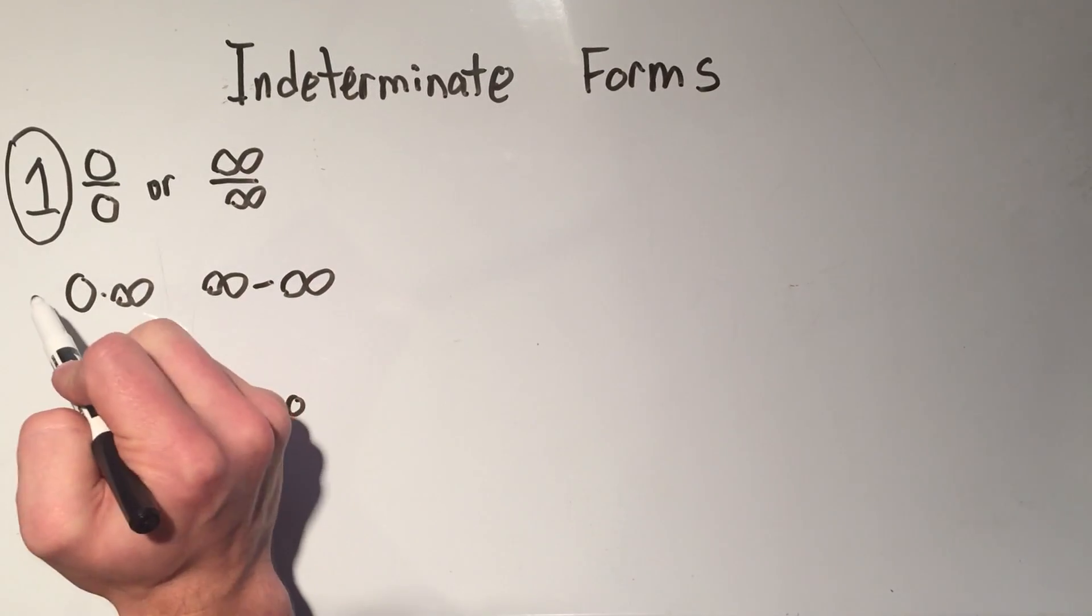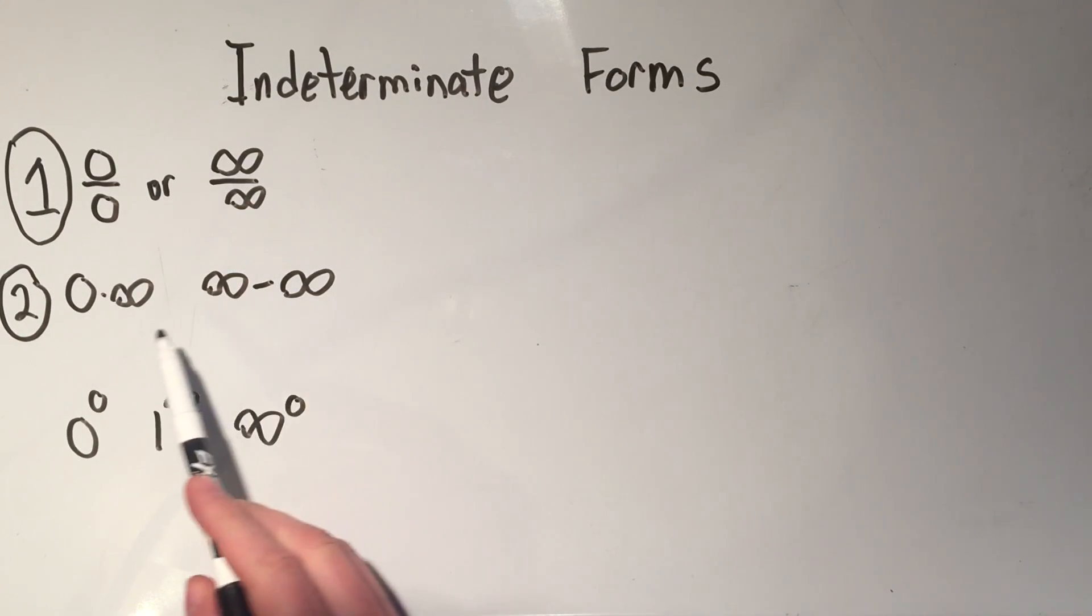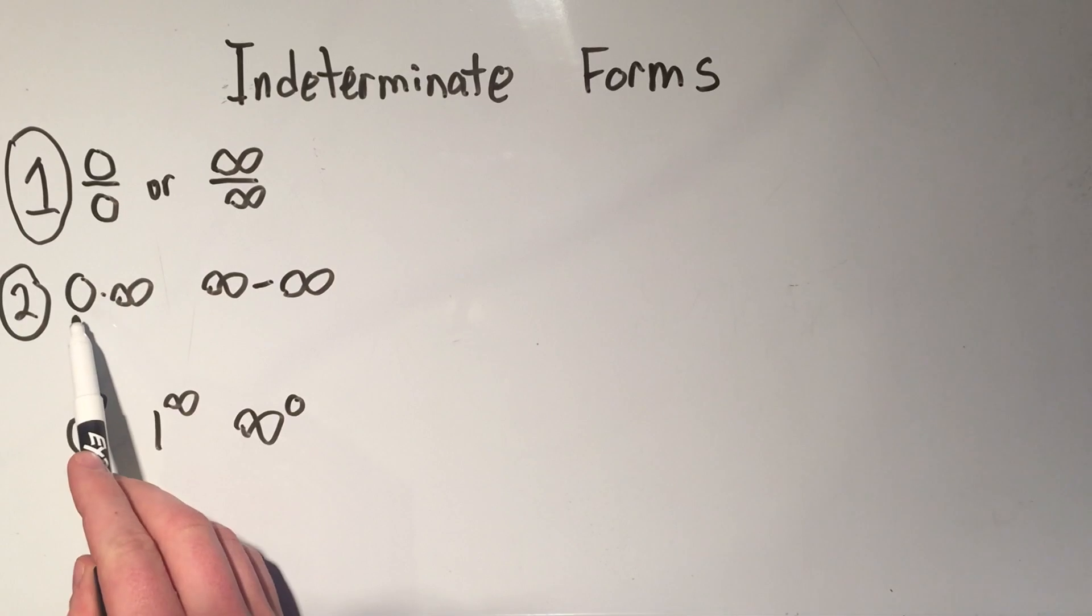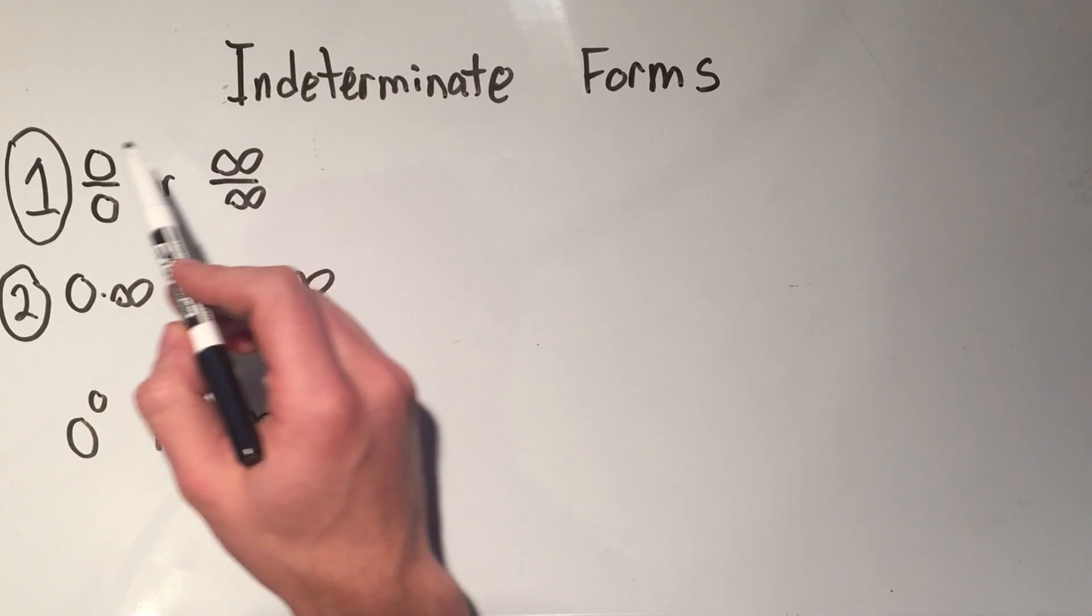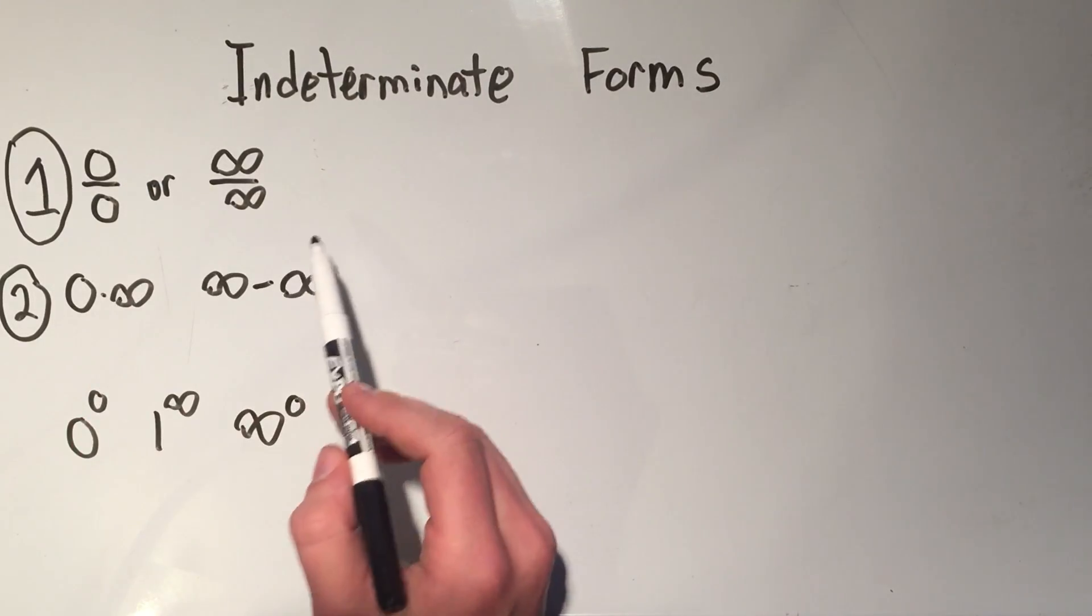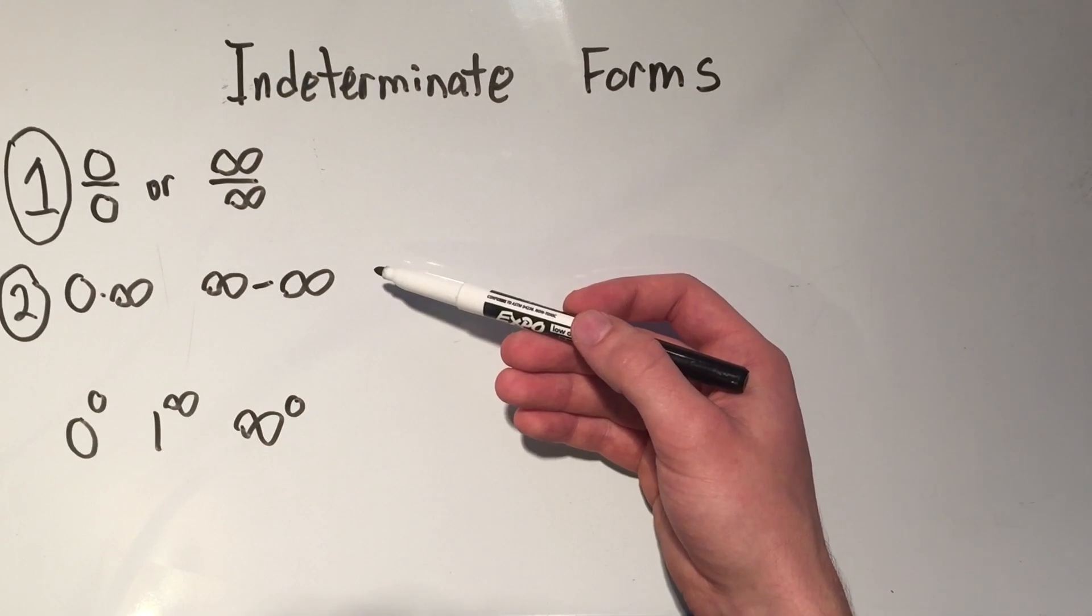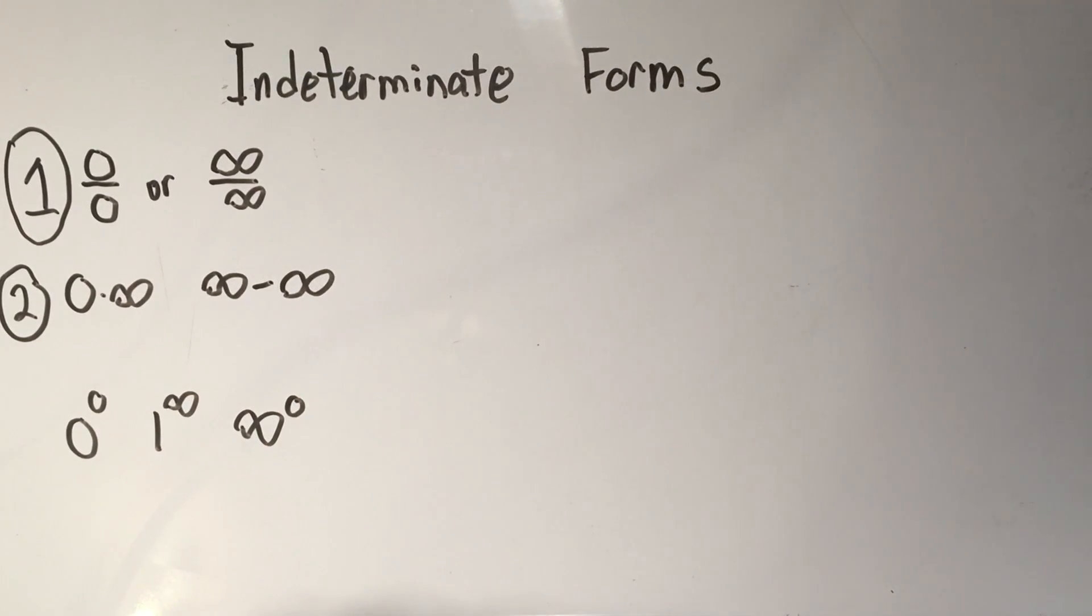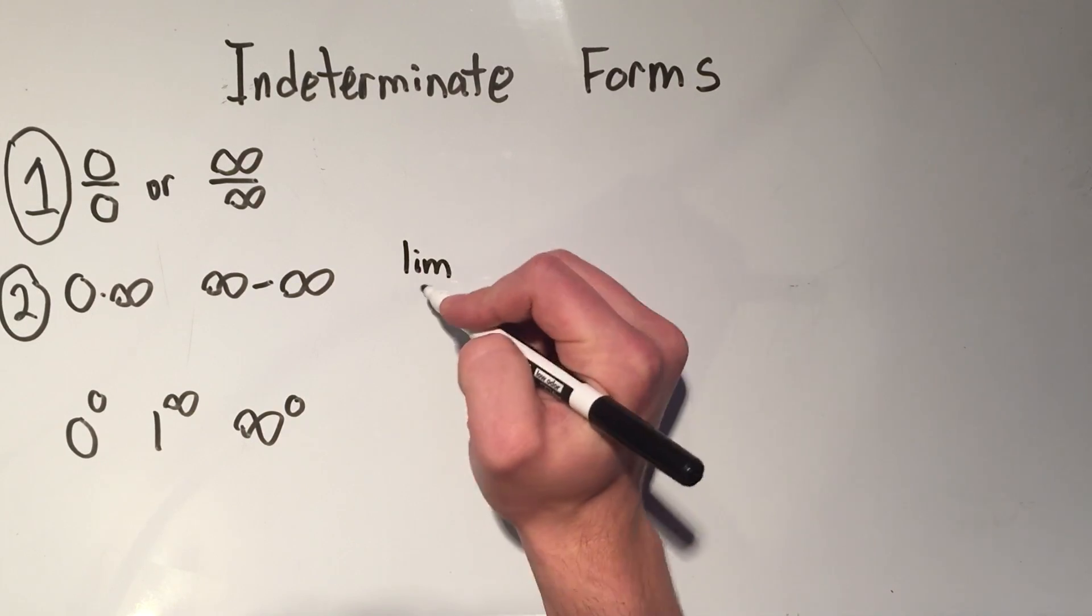The second category is just a little more difficult, and basically you're going to transform zero times infinity or infinity minus infinity into one of these. Okay, so your goal is to transform the second category into the first category. So let me show you an example of something that would look like that.